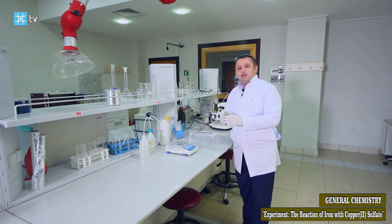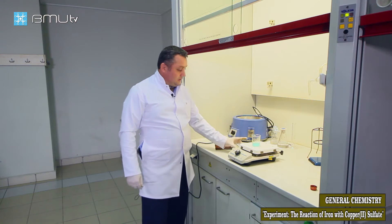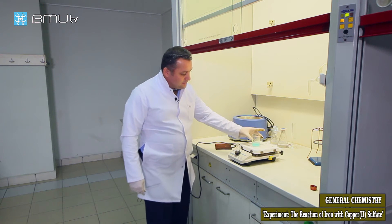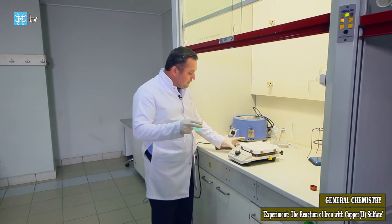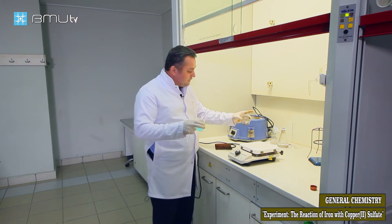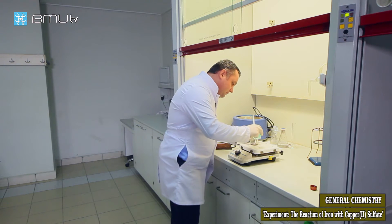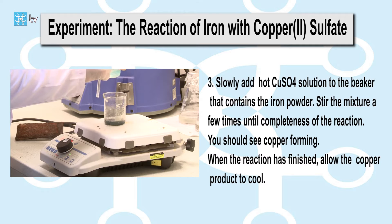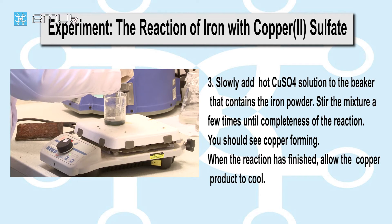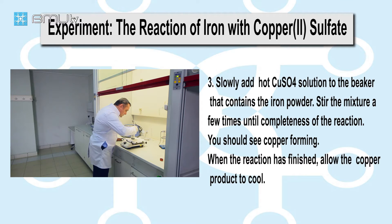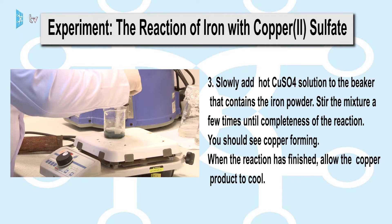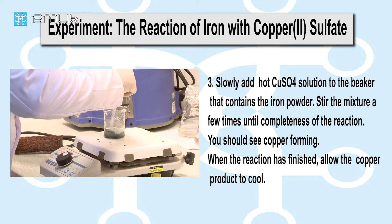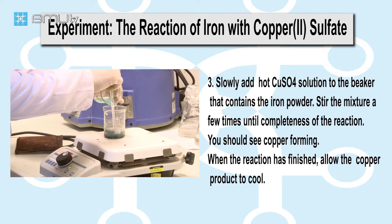We now have 3 millilitres of copper sulfate solution and we should heat it. Next, we add 30 millilitres of copper sulfate solution into the beaker which contains the iron powder. We should add it slowly and then swirl it. If you pay close attention, you will see that in our reaction mixture, copper is forming.